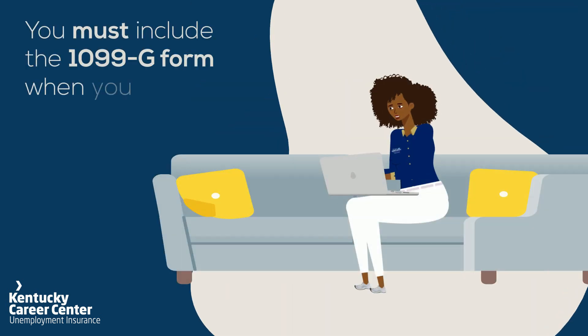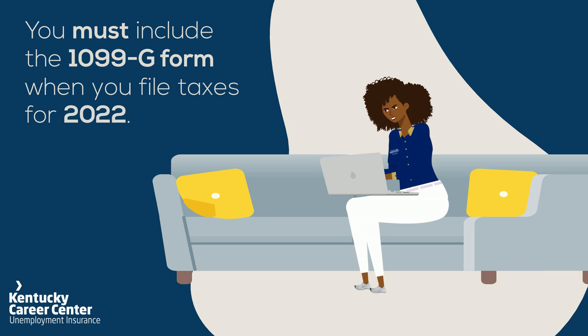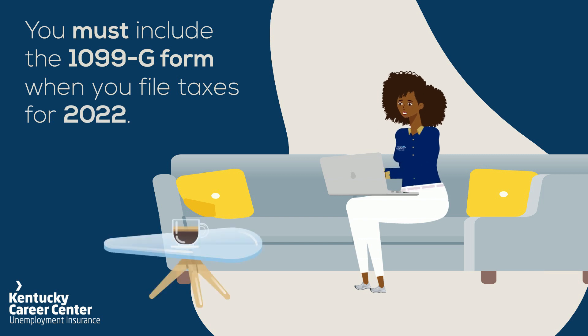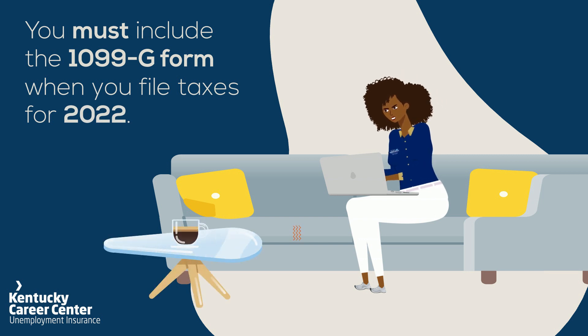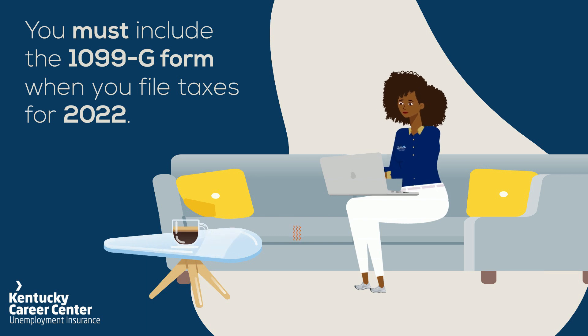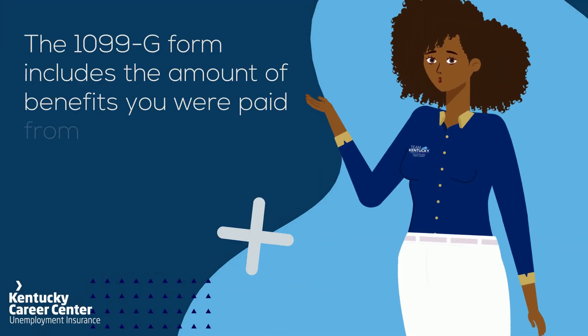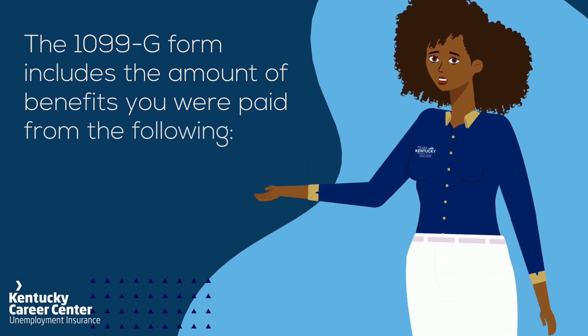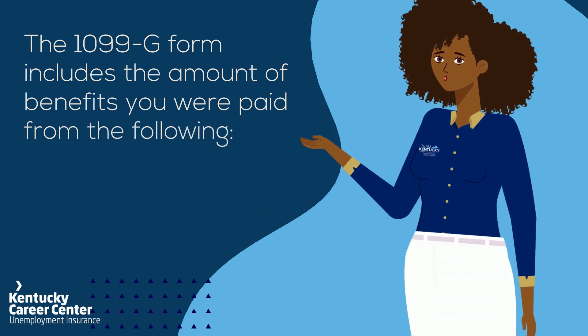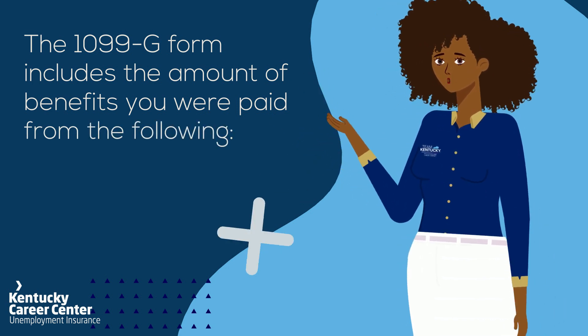Remember, you must include the 1099-G form when you file taxes for 2022. The 1099-G form includes the amount of benefits you were paid from the following.